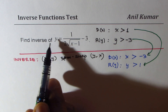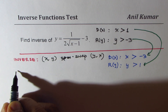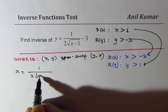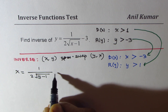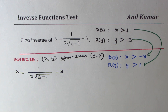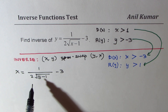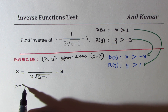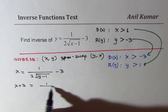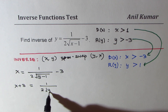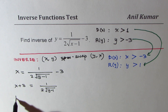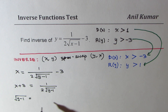Now let's swap x and y and solve. We get x equals 1 over 2 square root of (y minus 1), minus 3. We interchanged x and y to find the inverse, so the idea is to isolate y. Bringing 3 to the left side gives x plus 3 equals 1 over 2 square root of (y minus 1). We then take square root of (y minus 1) to the left side and (x plus 3) to the denominator — that is, we cross-multiply.